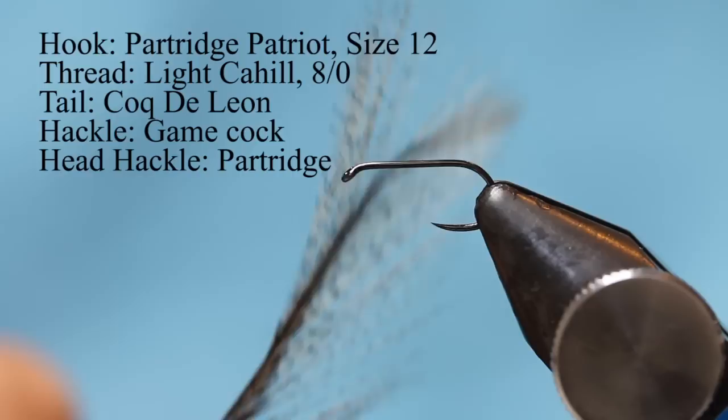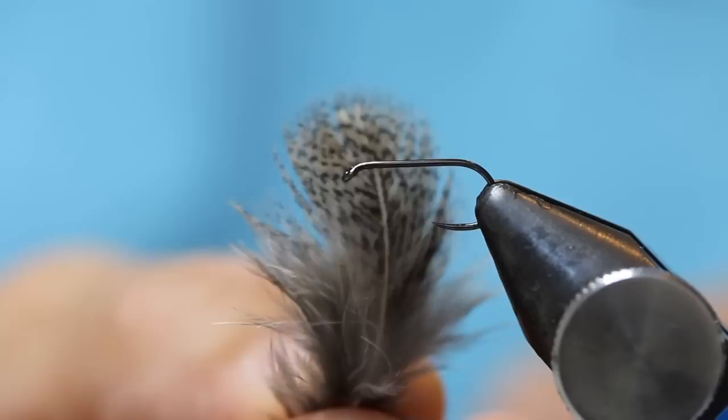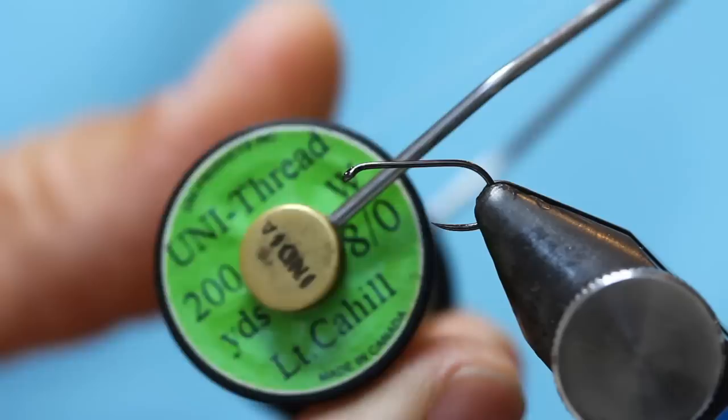So we've got a tire jingler. Here's the bits that we're going to use: a little bit of cook de Leon, a very nice cook cape and some partridge. And this is the thread I like to use for my buddies.